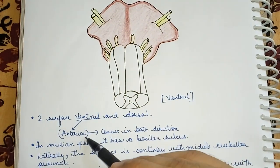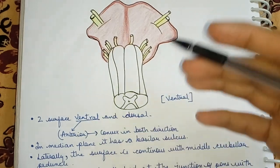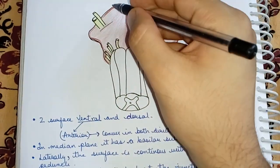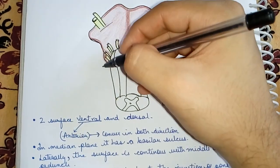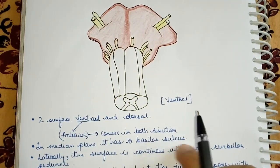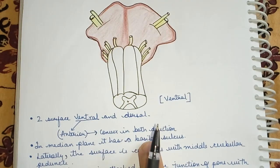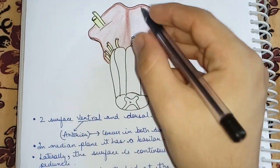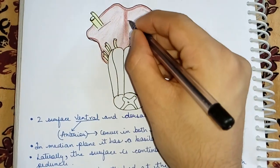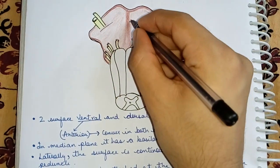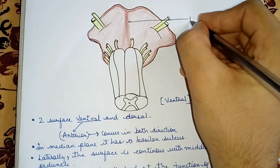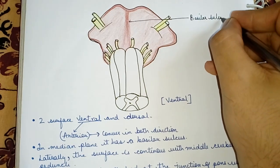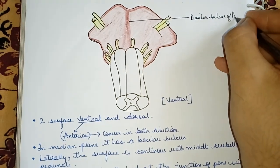The ventral surface is convex in both directions — in the anterior aspect it is convex, bulging outward as you can see. In the median plane, it has a basilar sulcus. This sulcus present in the middle is called the basilar sulcus of pons.